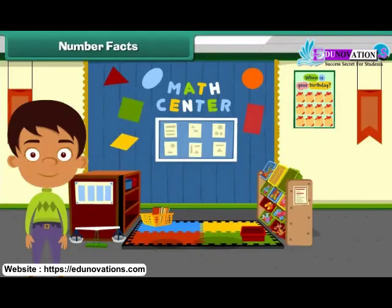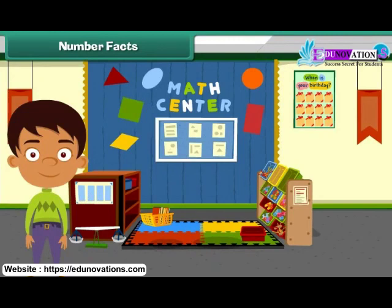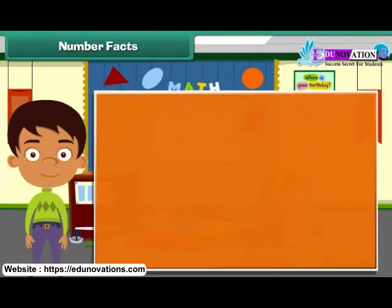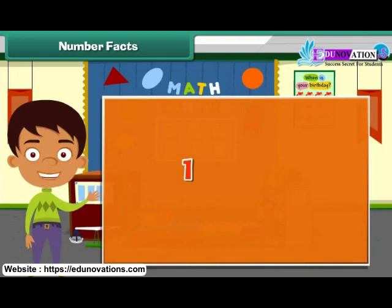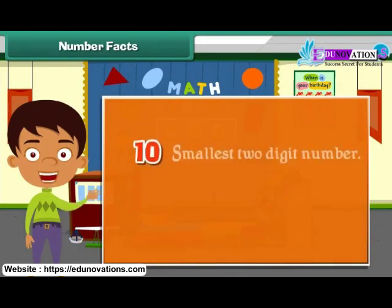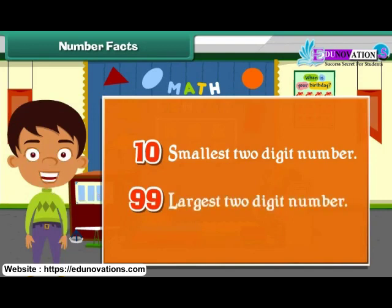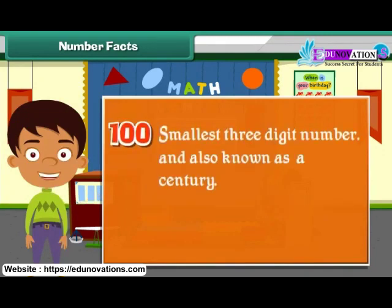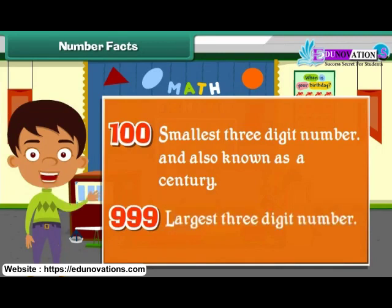Number facts: each number has an interesting fact associated with it. Let us know more about them. Number 1 is known as the ace number. A pair is a group of two objects. 10 is the smallest two-digit number. 99 is the largest two-digit number. 100 is also known as a century. 100 is the smallest three-digit number. 999 is the largest three-digit number.